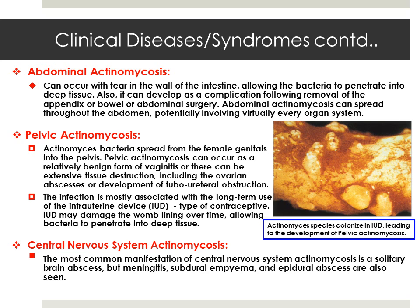Abdominal actinomycosis can occur when something tears the wall of the intestine, allowing bacteria to penetrate into deep tissue, or it can develop as a complication following abdominal surgery. Pelvic actinomycosis is reported mostly in female patients; the bacteria spread from the female genitals into the pelvis and the infection is associated with long-term use of an intrauterine device. The device may damage the wound lining over time, allowing bacteria to penetrate deep into tissue, or the infection can occur as a relatively benign form of vaginitis causing extensive tissue destruction including ovarian abscesses or tubo-ureteral obstruction.